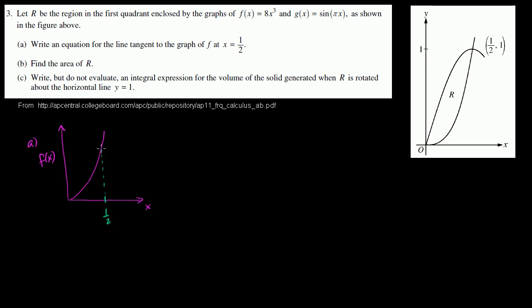If you evaluate f of one half, you get 8 times one half to the third, which is 8 times one eighth, which is 1. And they actually gave us that already on this point — this is the point (1/2, 1).